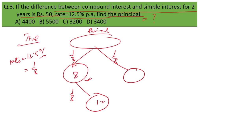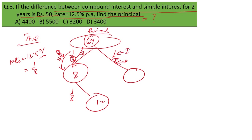Taking interest as 1 and principal as 8: in the second layer, if this 1 unit is interest for principal 8, then scaling up by 8 gives principal = 64. Since principal is 8 in the first layer scaling to 64 in the second, the second-layer interest is also multiplied by 8, giving 8. The difference between compound interest and simple interest for 2 years equals 1 unit.